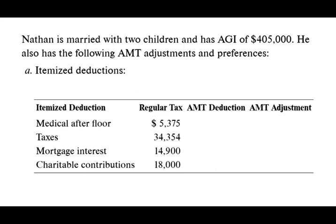Let's take a look at this CPA simulation. I could give you more exhibits and I'll show you how. Nathan is married with two children and has an AGI of $405,000. He has the following AMT adjustments and preferences. Rather than giving you AGI directly, I could give you the full tax return and you'd have to find that AGI is $405,000. Potential itemized deductions include medical after the floor, taxes, mortgage interest, and charitable contribution.